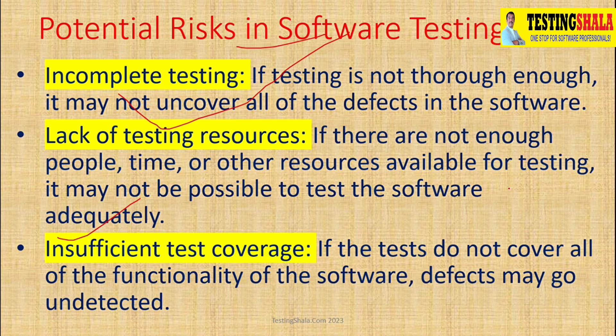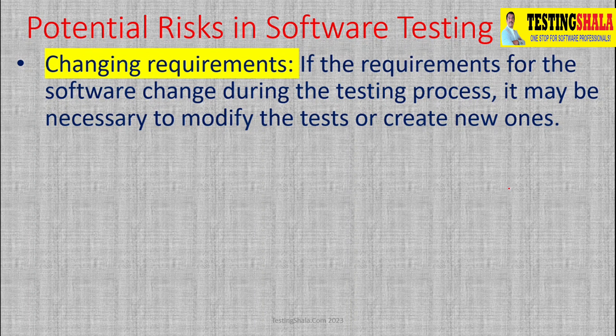The next one is changing requirements. This is a very key risk in any software testing project. If requirements keep changing most often, it becomes very challenging — we have to keep modifying all the test cases and keep adding new test cases as requirements change. That is a higher risk and we may lose track of the overall progress of the project.